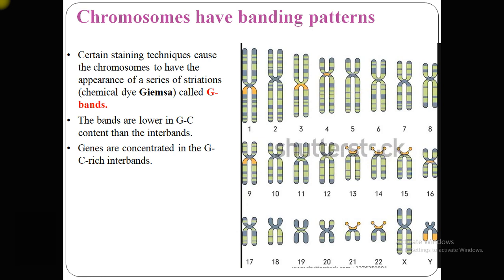After discussing heterochromatin and euchromatin, we come to chromosome banding patterns. Human chromosomes have a banding pattern — these are all autosomes, 22 chromosomes, one set from the father's DNA and one set from the mother's DNA, and X and Y are the sex determination chromosomes.